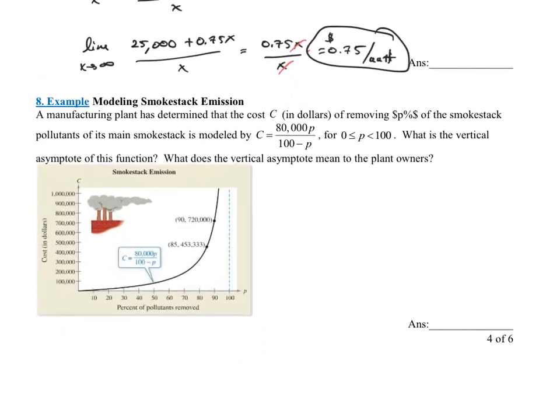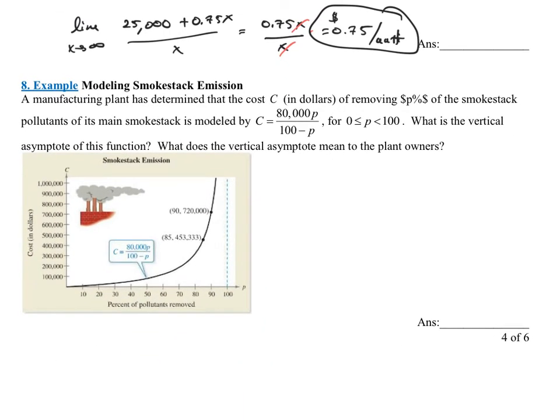Alright. Let's look at another example of when we might care about asymptotes. This one is caring about a vertical asymptote. It says, a manufacturing plant has determined that the cost C in dollars of removing P, that's a typo there, that should just be P, of the smokestack pollutants of its main smokestack are modeled by C equals 80,000P over 100 minus P, and this is accurate for 0 less than P less than 100. P is a percent here. And so let's look at it. It says, what is the vertical asymptote of a function?